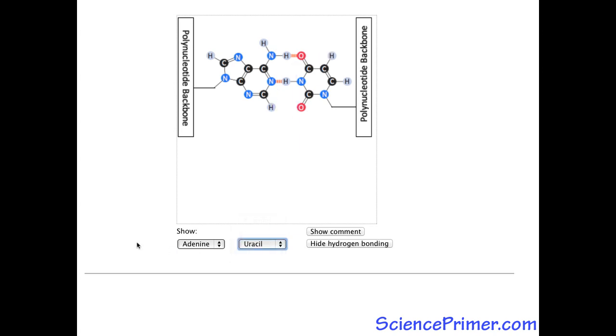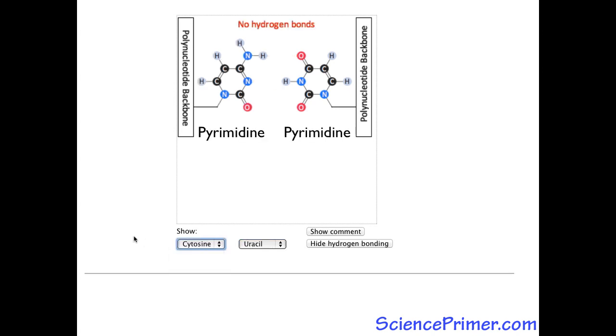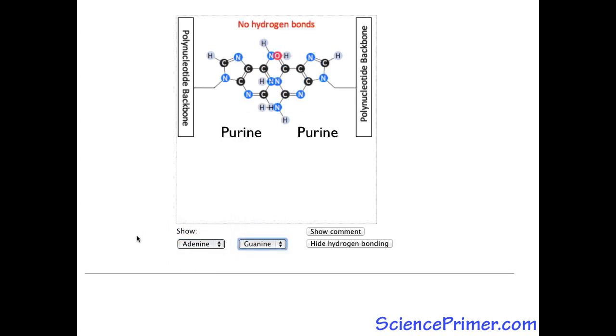Complementary pairs always involve one purine and one pyrimidine base. Pyrimidine-pyrimidine pairings do not occur because these relatively small molecules do not get close enough to form hydrogen bonds. Purine-purine pairings do not form because these bases are too large to fit in the space between the polynucleotide strands.